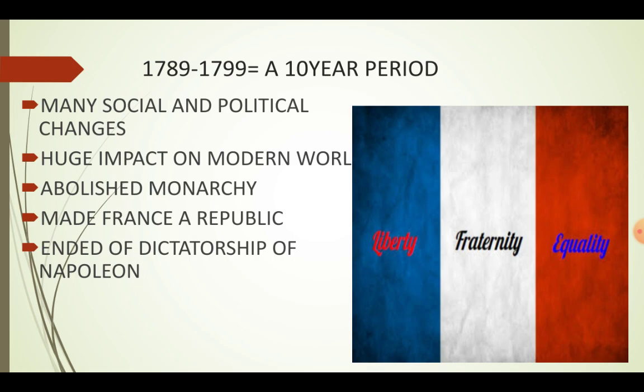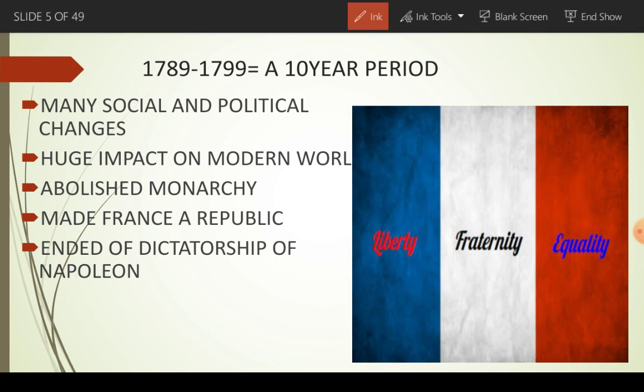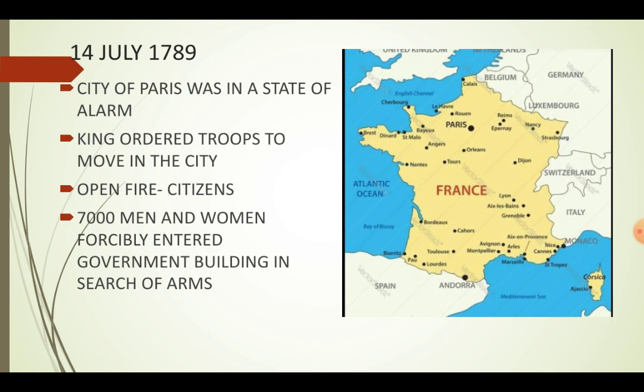We have to learn a ten-year period starting from 1789 to 1799, in which so many social and political changes occurred in France. In changes ka modern world ke upar bahot gehra impact pada tha. The people of France abolished monarchy and made France a republic. They fought against the dictatorship of Napoleon and ended his dictatorship. They gave the ideas of liberty, fraternity, and equality to the world.